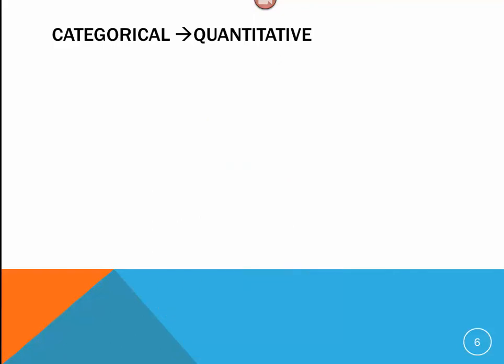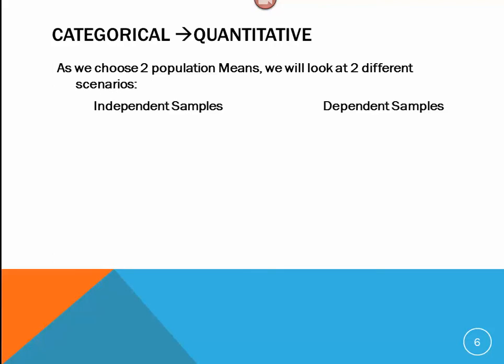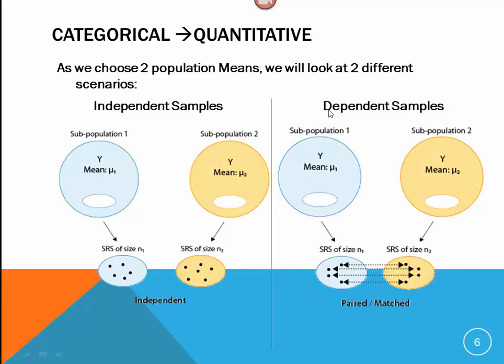Now, there's two different types of population means using two different scenarios. One is where we have two samples that are independent, and the other we call dependent. And here's a picture to kind of give you an idea of what we're talking about here.